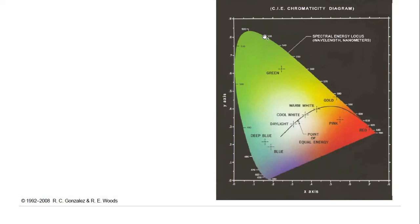Moving from the boundary toward the interior in a straight line decreases saturation, which means increasing the contribution of white light to that particular hue. Somewhere in the interior there is a point where red, green, and blue contribute equally. That point gives the color white and is called the point of equal energy.